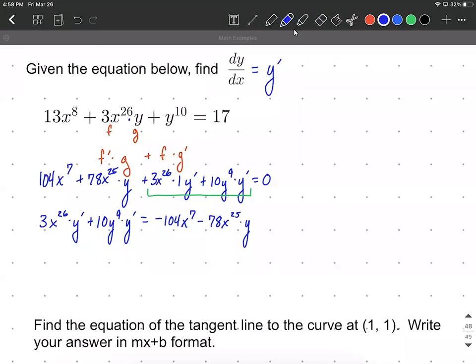All right, here's kind of the key on this to get y prime by itself: both those terms on the left-hand side have y primes, so that works as a common factor. So we can factor out a common factor of y prime from each of those. So that's going to leave us with 3x to the 26th plus 10y to the 9th power on that side